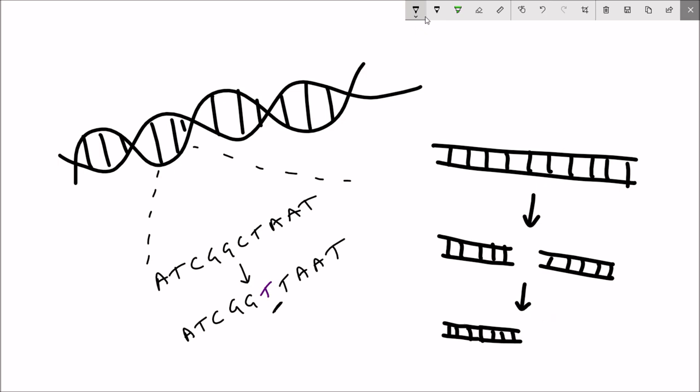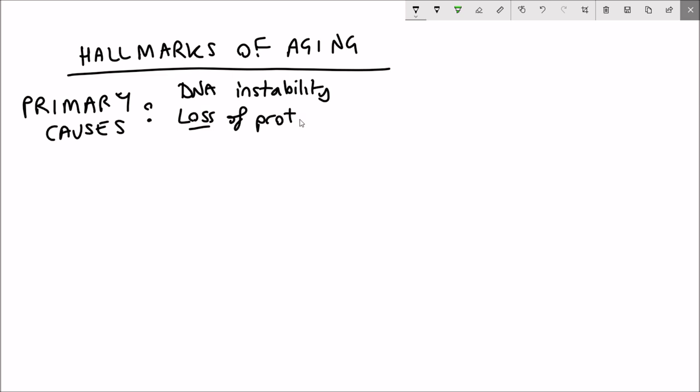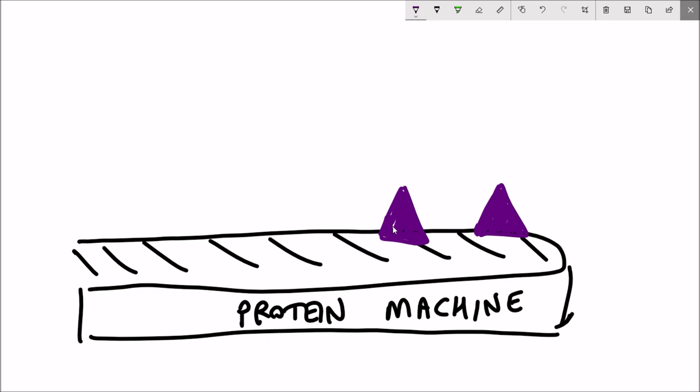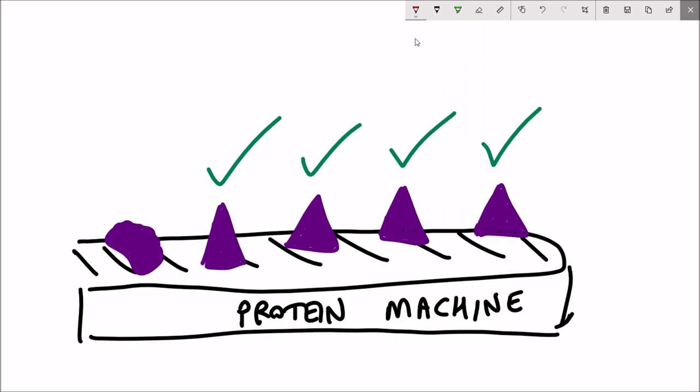Second on our list is loss of proteostasis. Proteostasis includes processes that control the formation of correctly folded proteins because correctly folded proteins equals functional happy protein.